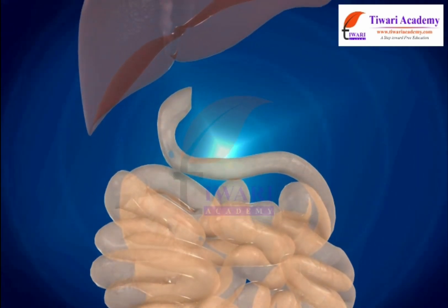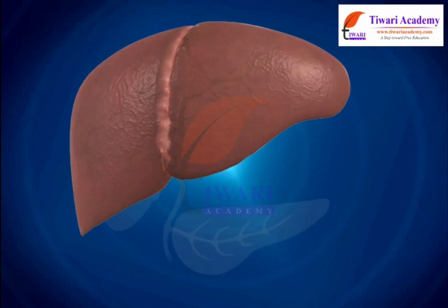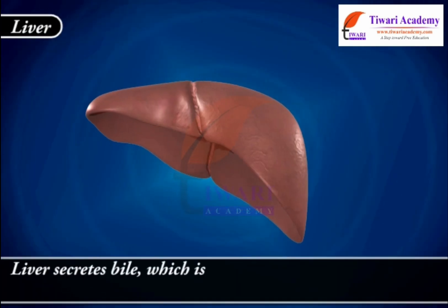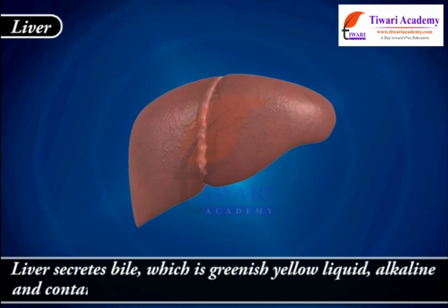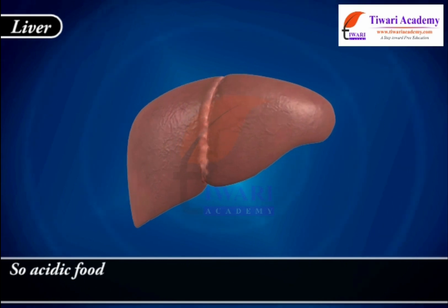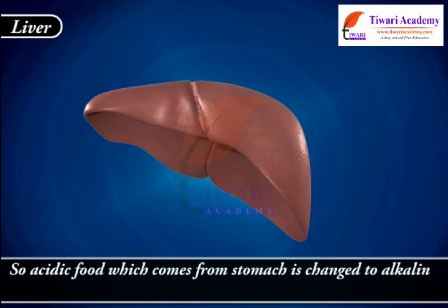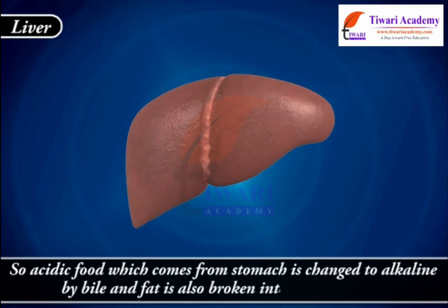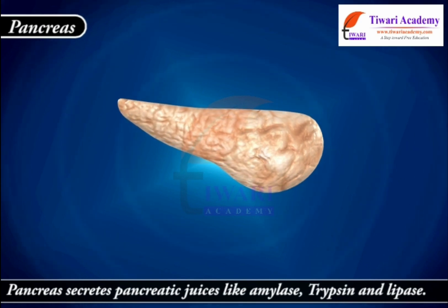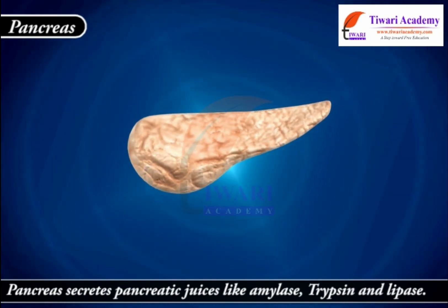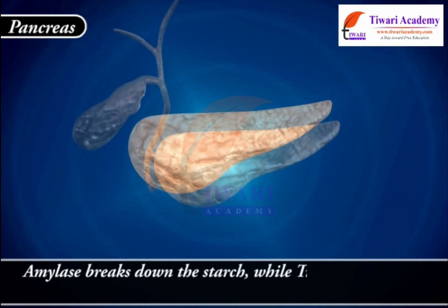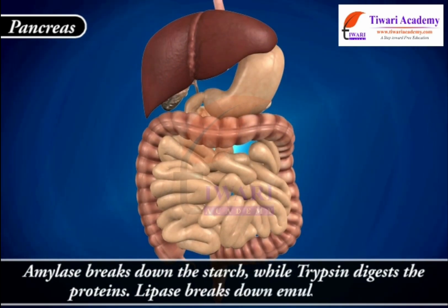The small intestine receives the secretion of two glands: the liver and the pancreas. The liver secretes bile, which is a greenish yellow, alkaline liquid containing salts that help to emulsify or break down fats. Acidic food coming from the stomach is changed to alkaline by bile, and fat is broken into small globules. The pancreas secretes pancreatic juices — amylase, trypsin and lipase. Amylase breaks down starch, trypsin digests proteins, and lipase breaks down emulsified fats.